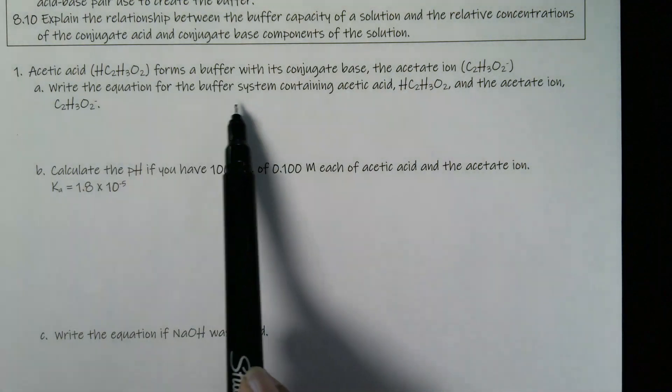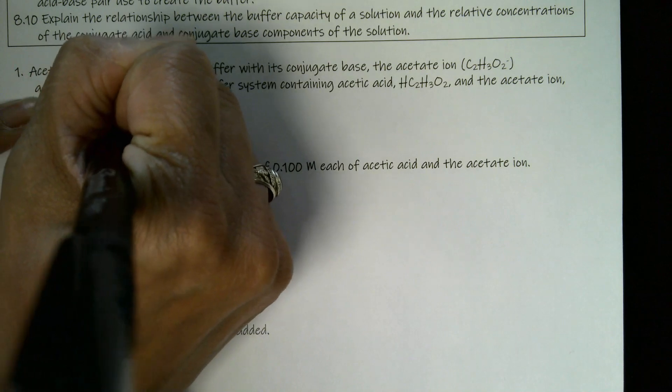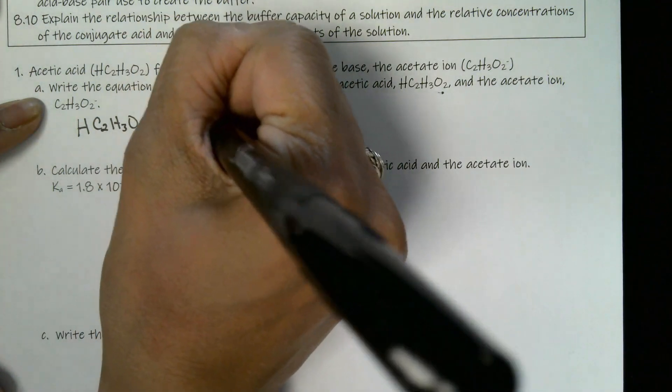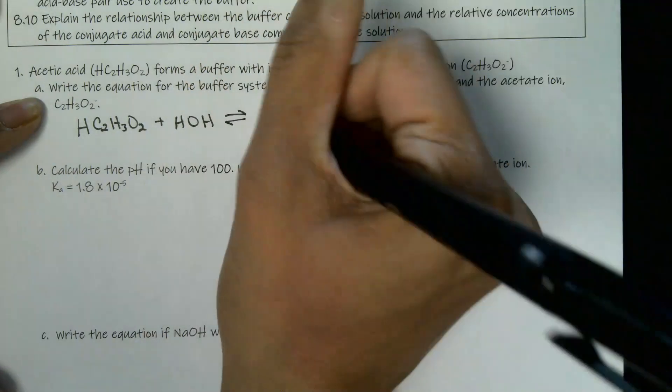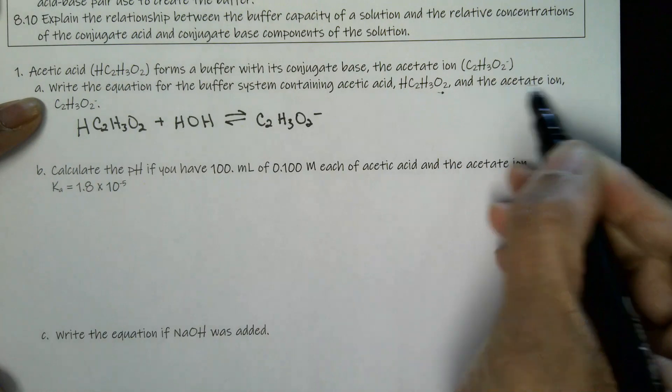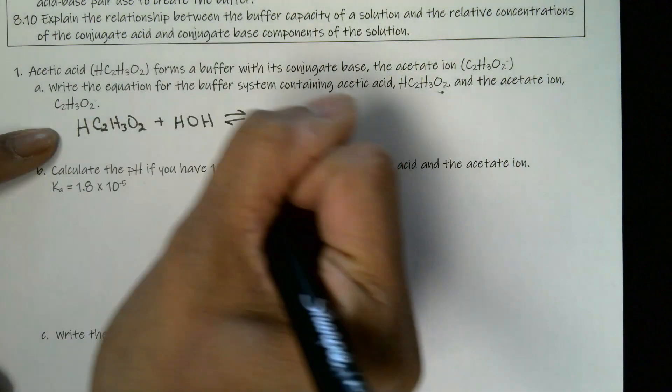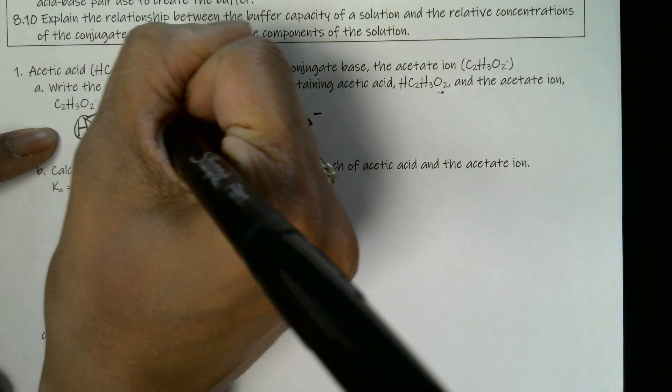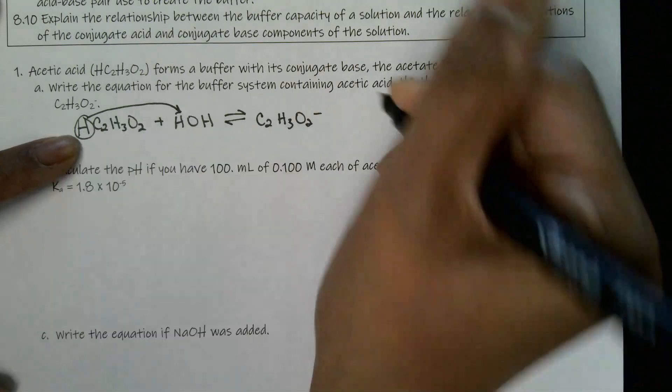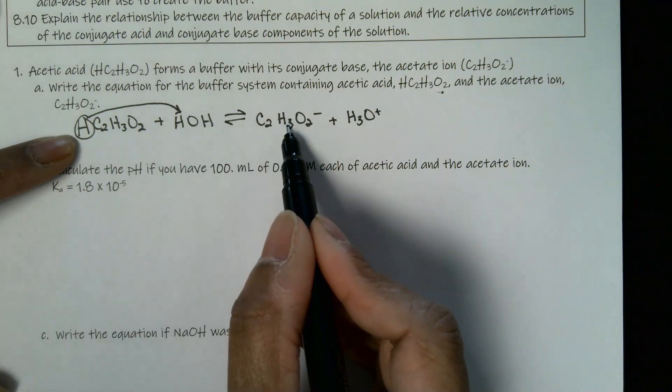So here we're going to write the equation for the buffer system containing acetic acid and the acetate ion. So we're going to show that we have HC2H3O2, that's the acetic acid. And we're going to add some water to it. We're going to have it in the presence of water. Remember, all of these are aqueous solutions. And so they will always have water somewhere around. And we're going to look at its conjugate base, which is the acetate ion or C2H3O2 minus. So if this is going to be an acid, it's going to donate an H plus to our water, giving us C2H3O2 minus. And we end up with H3O plus, which again is an acid.